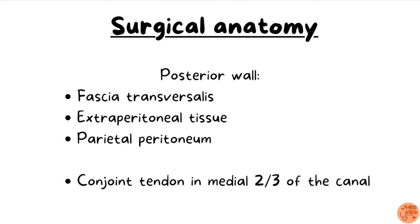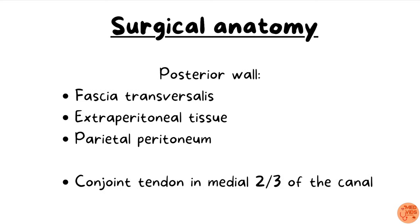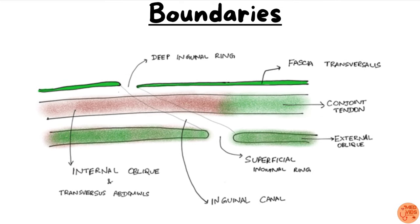For the posterior wall of the inguinal canal, throughout the posterior wall we have the transversalis fascia, which lies posterior to the transversus abdominis muscle. Behind the transversalis fascia we have extraperitoneal tissue, and behind that the parietal peritoneum. In the medial two-thirds of the canal alone, there is an extra structure posteriorly — the conjoined tendon, which is formed by the combined tendons of the internal oblique and transversus abdominis muscles.